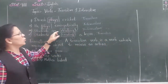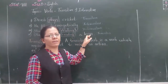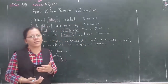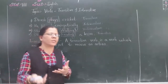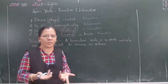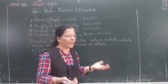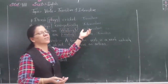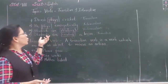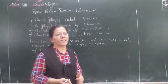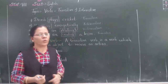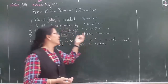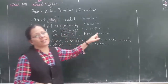Similarly, 'Students are reading' — who is doing the action? Students. But the reading action is done on what? We don't know. Hence the verb reading in this sentence is intransitive. 'Students are reading a lesson' — now the reading action is done on what? On lesson. And hence the verb reading is transitive.